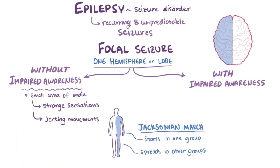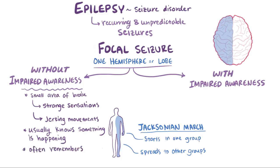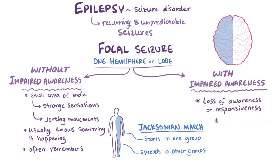Typically the person is awake and alert, and will usually know that something's happening and will remember the seizure afterwards. Focal seizures with impaired awareness, on the other hand, involve having some sort of loss of awareness and responsiveness, so they might not remember exactly what happened during the seizure.